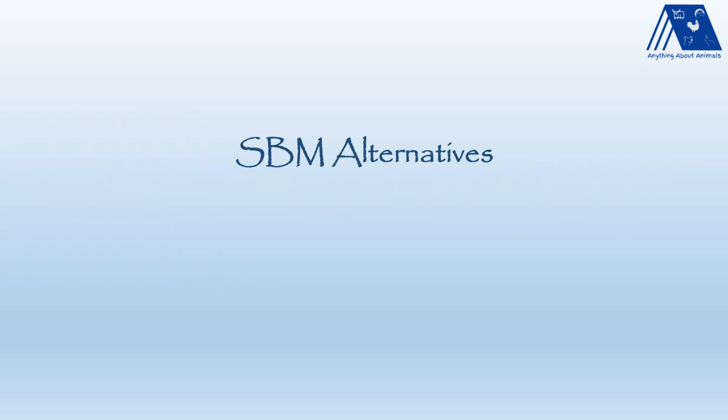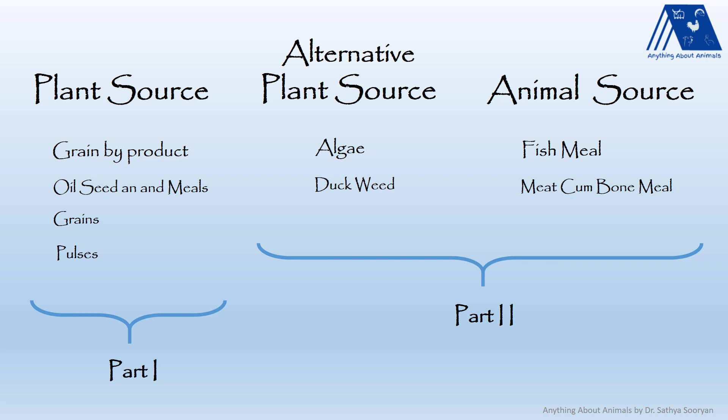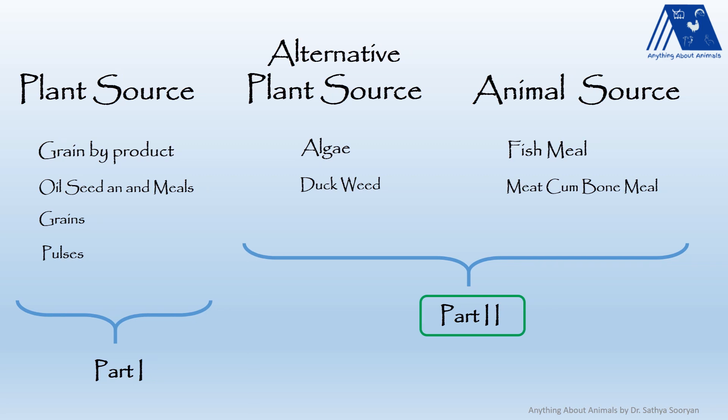In our previous video we were seeing the different ingredients which we can use instead of soybean meal. In that we discussed about the plant sources — grains, soil, seeds and different pulses — in Part 1. If some persons have not seen Part 1, please go and see it first. In this part we will be seeing alternative plant sources like algae and duckweed, and also animal sources like fish meal and meat and bone meal.